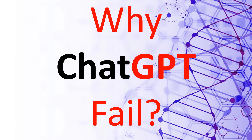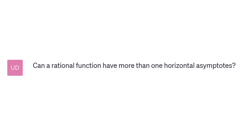ChatGPT is an excellent AI-based tool that can be used to successfully achieve many things. However, when it comes to mathematics, even AI systems fail. Let's look at a simple problem from calculus: can a rational function have more than one horizontal asymptote? A rational function means a function that can be written as a ratio of two polynomials.